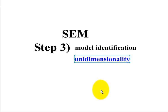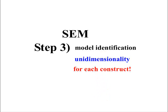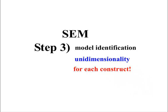We're going to do what we call unidimensionality, and that has to be done for each of our constructs. So we've got three constructs, so we're going to have to do it three times.